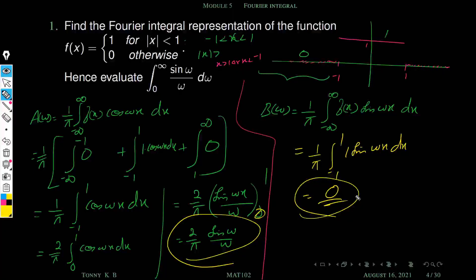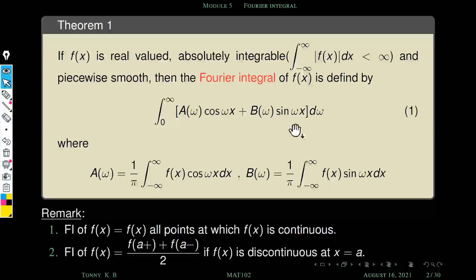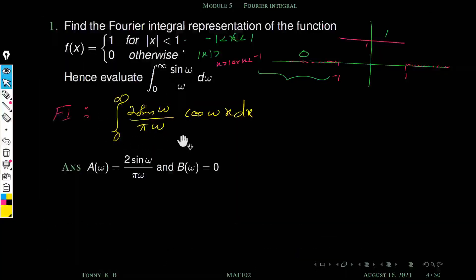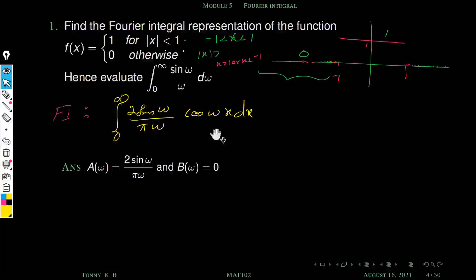Now we write the Fourier integral and plug in a(ω) and b(ω). The Fourier integral is ∫₀^∞ [a(ω)cos(ωx) + b(ω)sin(ωx)] dω. Since b(ω) = 0, we have only one term. Substituting a(ω) = 2sin(ω)/(πω), the Fourier integral representation becomes ∫₀^∞ [2sin(ω)/(πω)] cos(ωx) dω. This is exactly the Fourier integral representation.